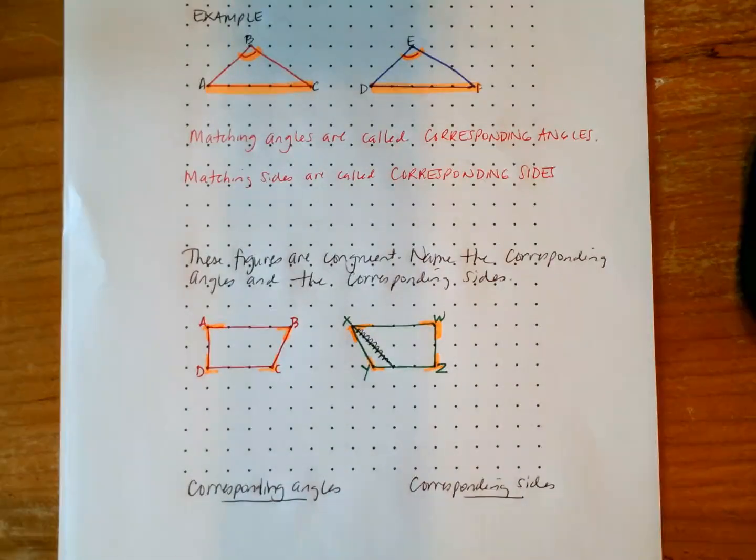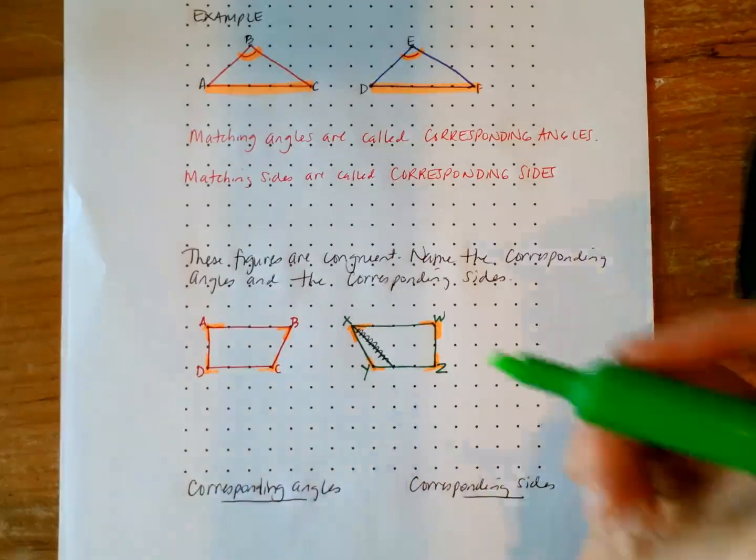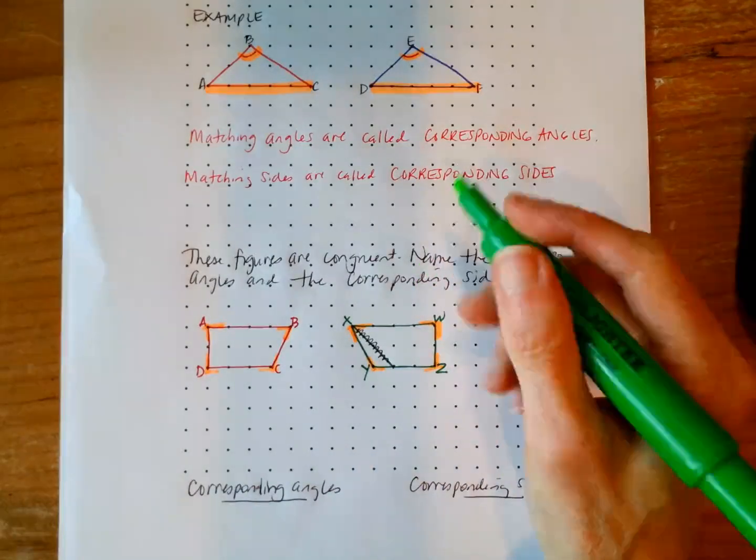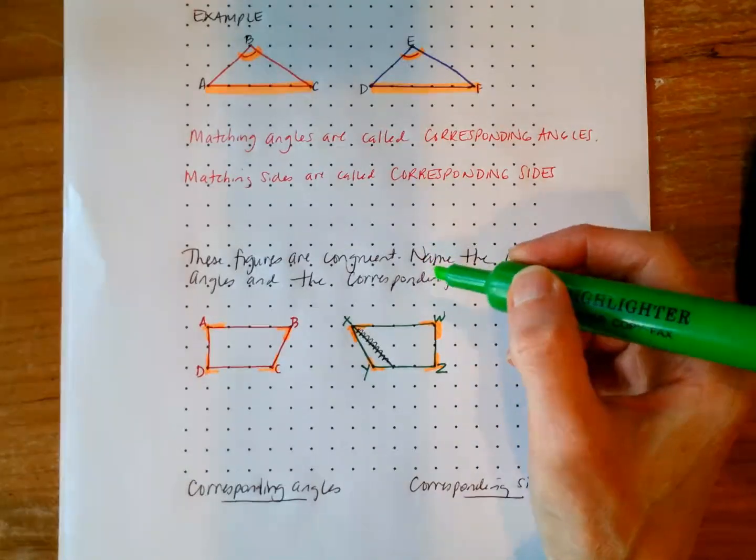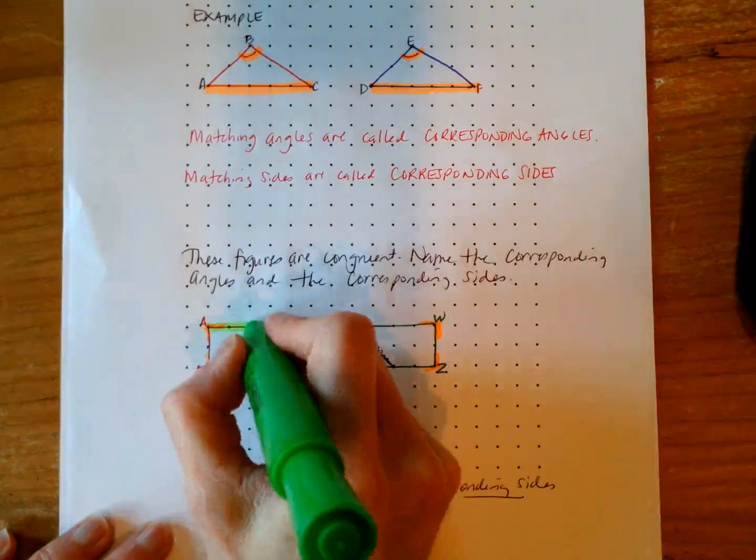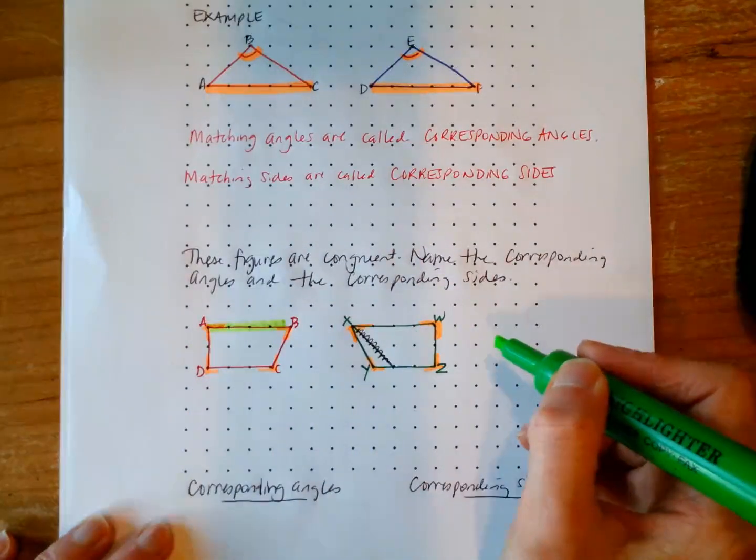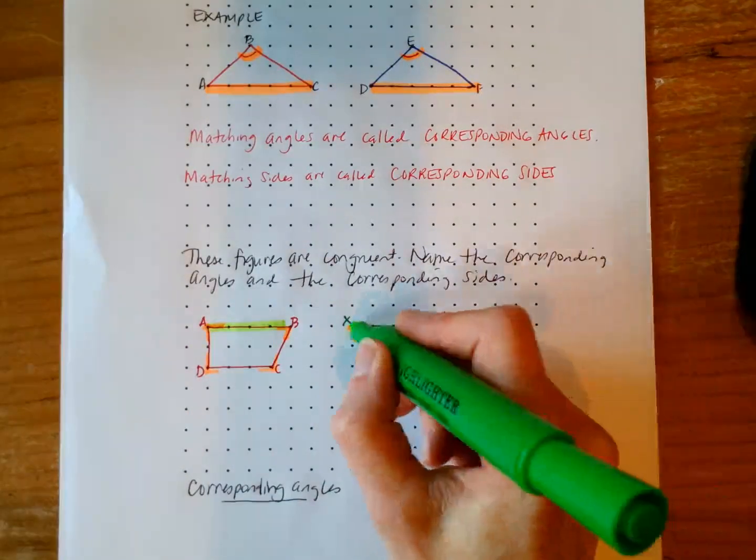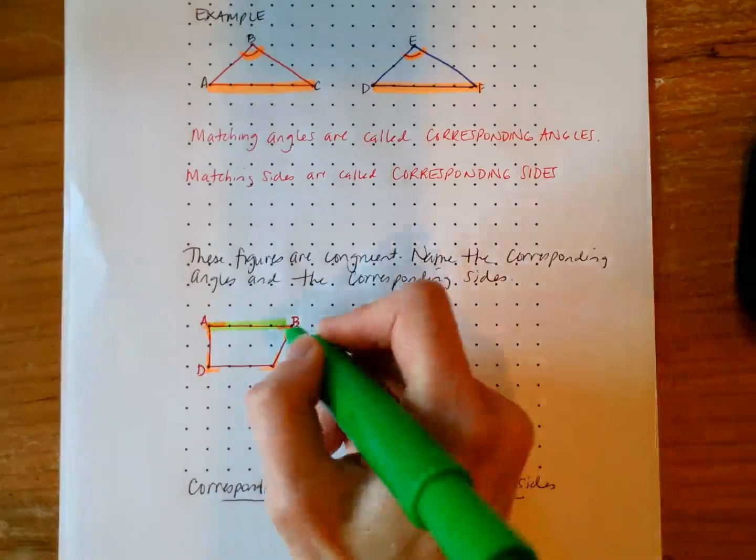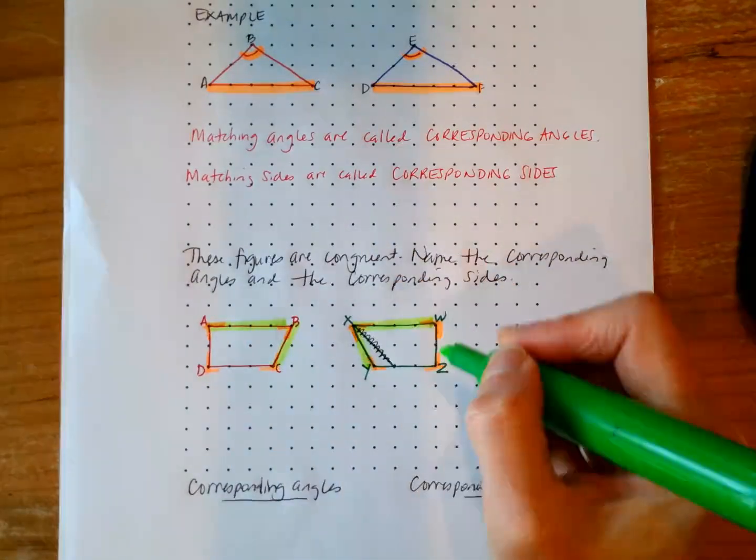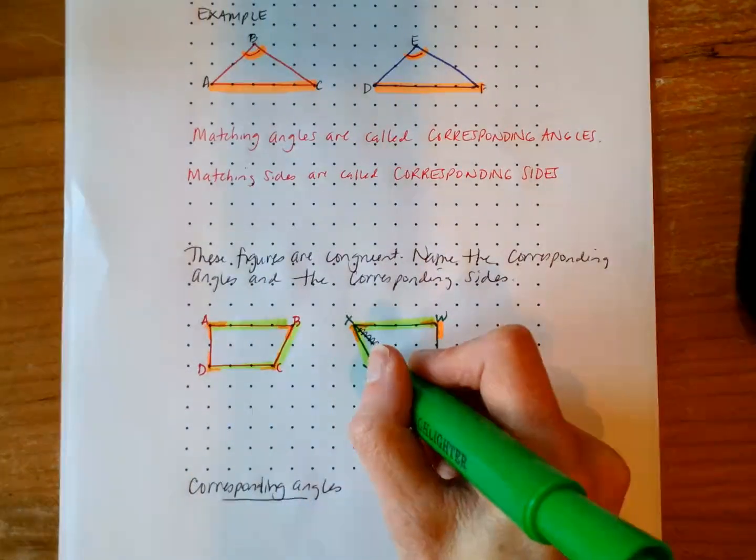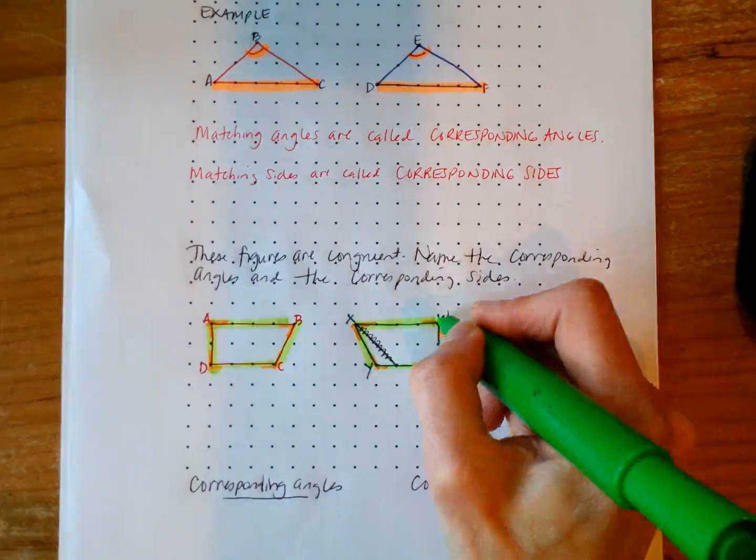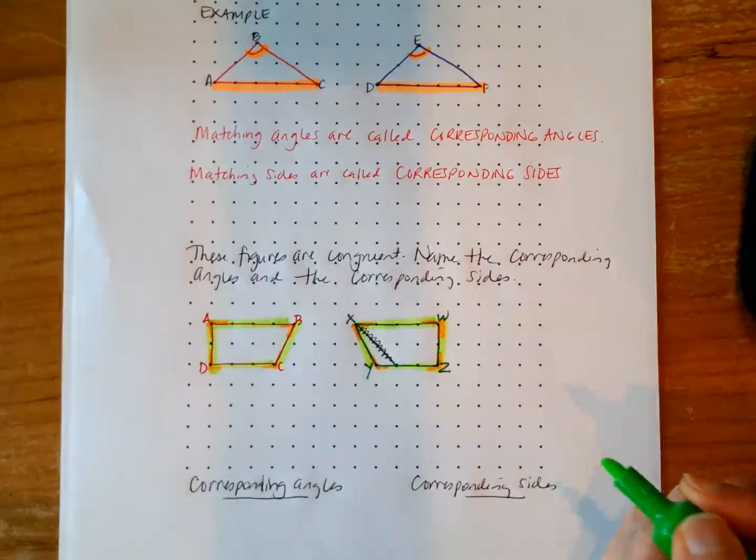How one angle compares to its corresponding angle on the other shape. So then with corresponding sides, we're going to be identifying the same thing. But of course, we are talking about two points being connected to form a side. So angle or side AB would be corresponding with XW. BC would correspond with XY. CD would correspond with YZ. And then AD, its corresponding side would be WZ.